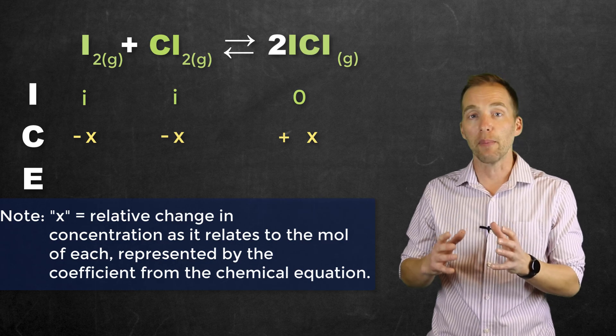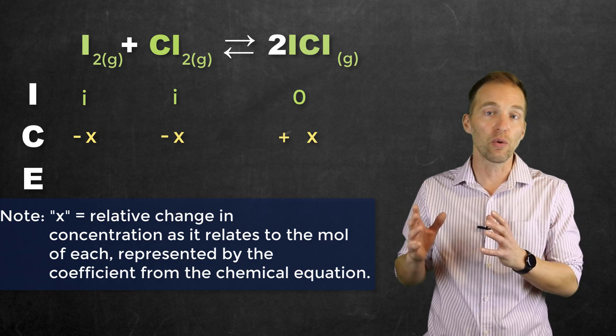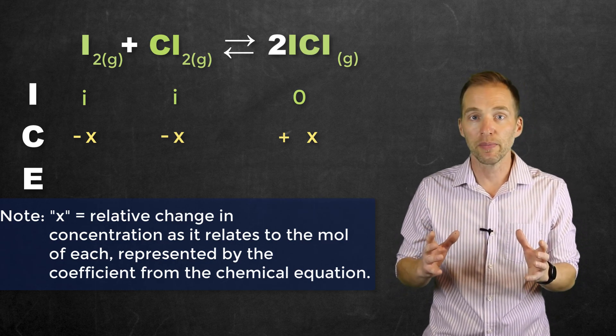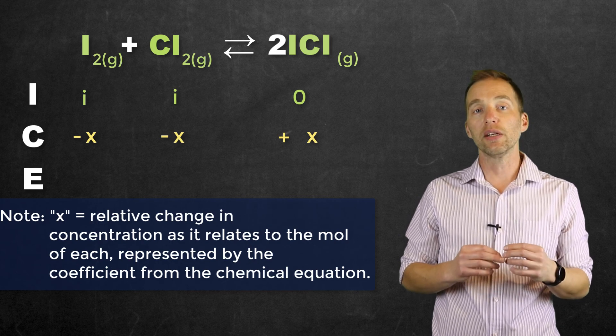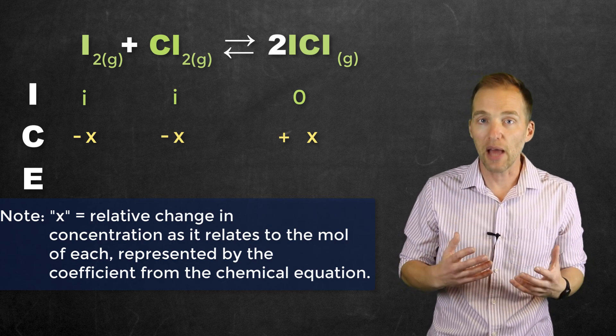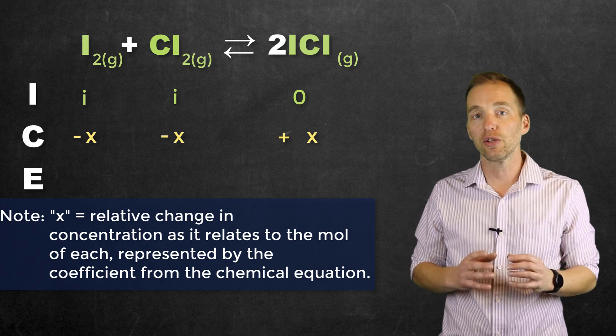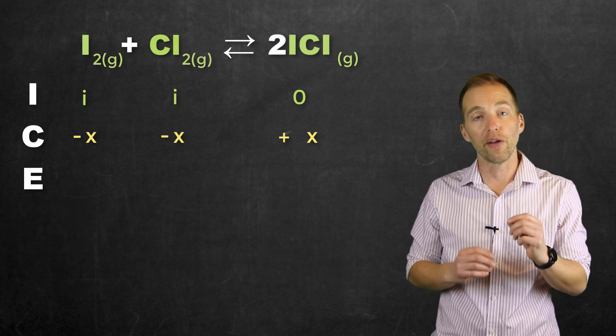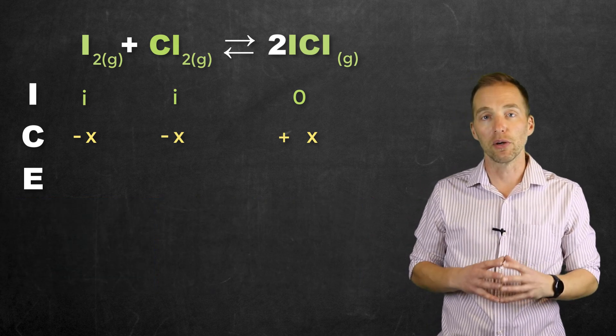So the way that we set up the C portion, or row, of the ice table, is that we are going to include the variable X to represent the change, but the magnitude of that X is going to be dependent on the coefficient from the balanced chemical equation.